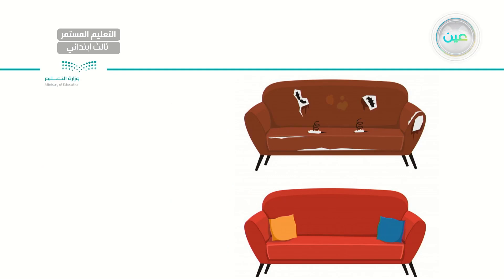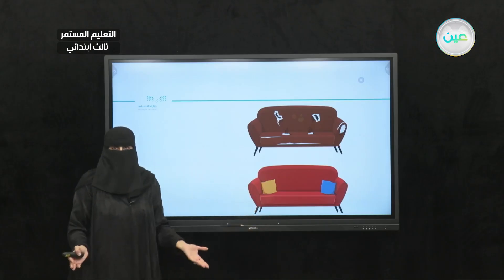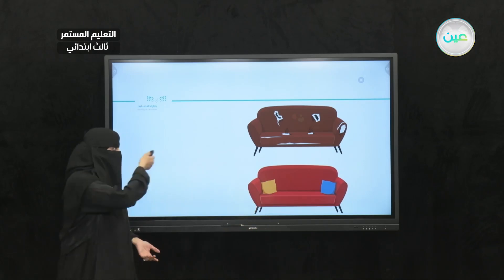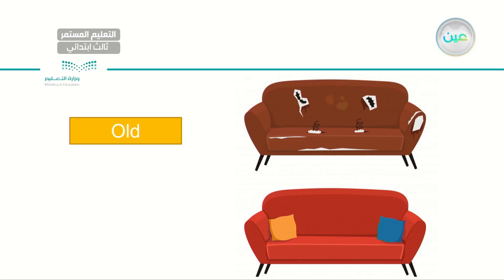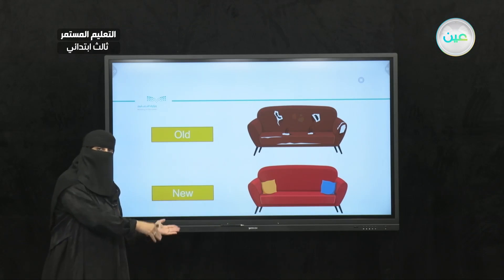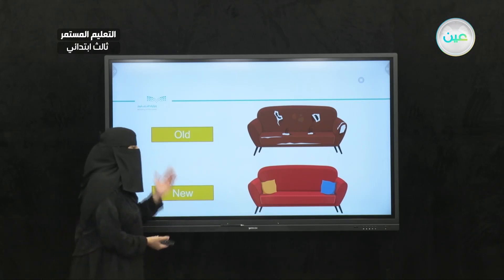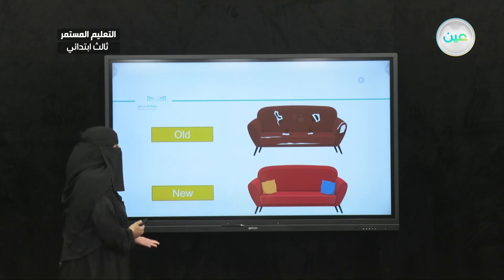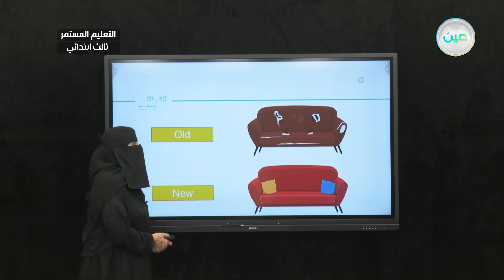Here are other opposites. I have two sofas — they have the same size but completely different condition. For the one on top, it looks old. The opposite is the couch below — it is new. So I have an old sofa and a new sofa. Let's read together: old, new. Very good. Excellent.